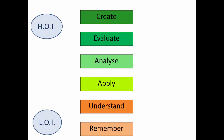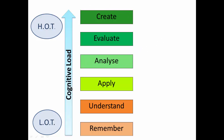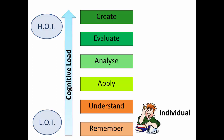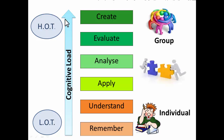I saw this originally presented in a video by Ramsey Massalam. We see our low order thinking — remember and understand — at one end, and high order thinking — analyzing, evaluating and creating — at the other end of Bloom's taxonomy. We can describe that as the cognitive load increasing; they require a bit more grunt from the brain as you move up. In our classroom we need to think about when it suits to be individual and when it suits the group environment. The high order thinking activities are the ones that really suit the group environment, with support from the teacher and support from peers.